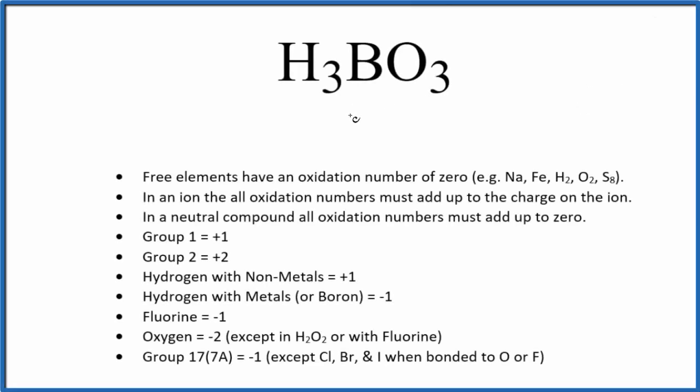Let's find the oxidation numbers for each element here in H3BO3. This is perboric acid. So we'll start out, we look at H3BO3, there's no negative or positive sign after that. So it's a neutral compound. All the oxidation numbers, they're going to add up to zero.